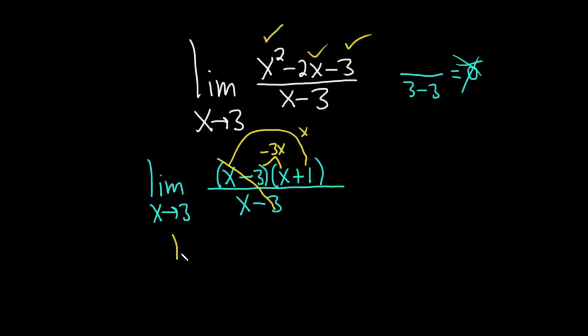Boom, these go away. Let's write that limit sign one more time. x approaches 3. And we're left with just x plus 1.